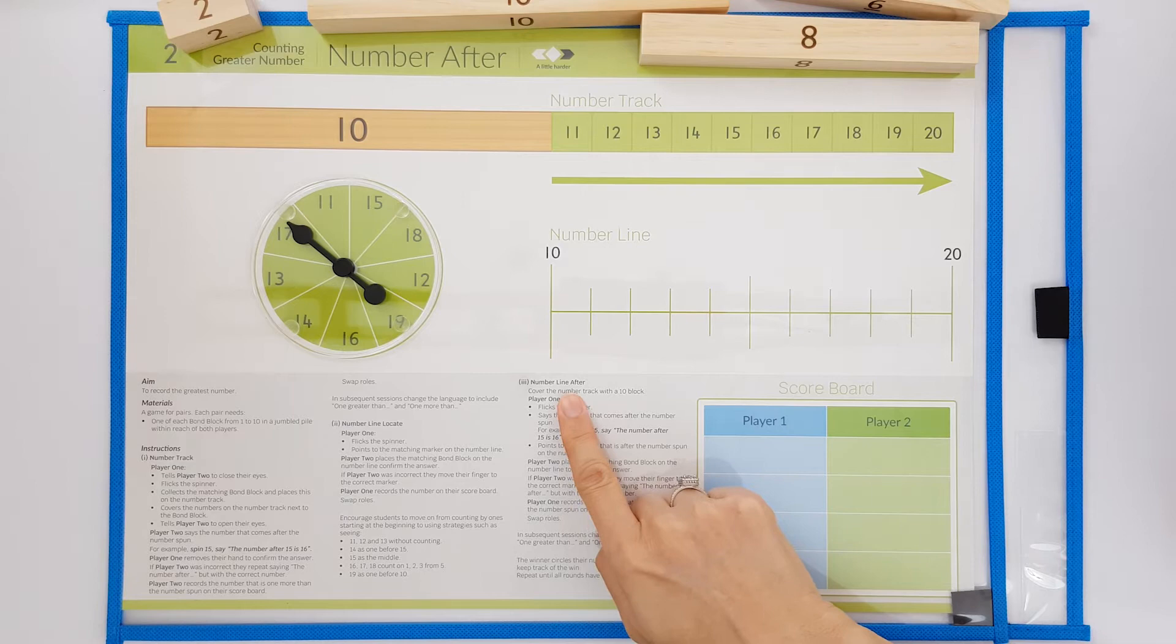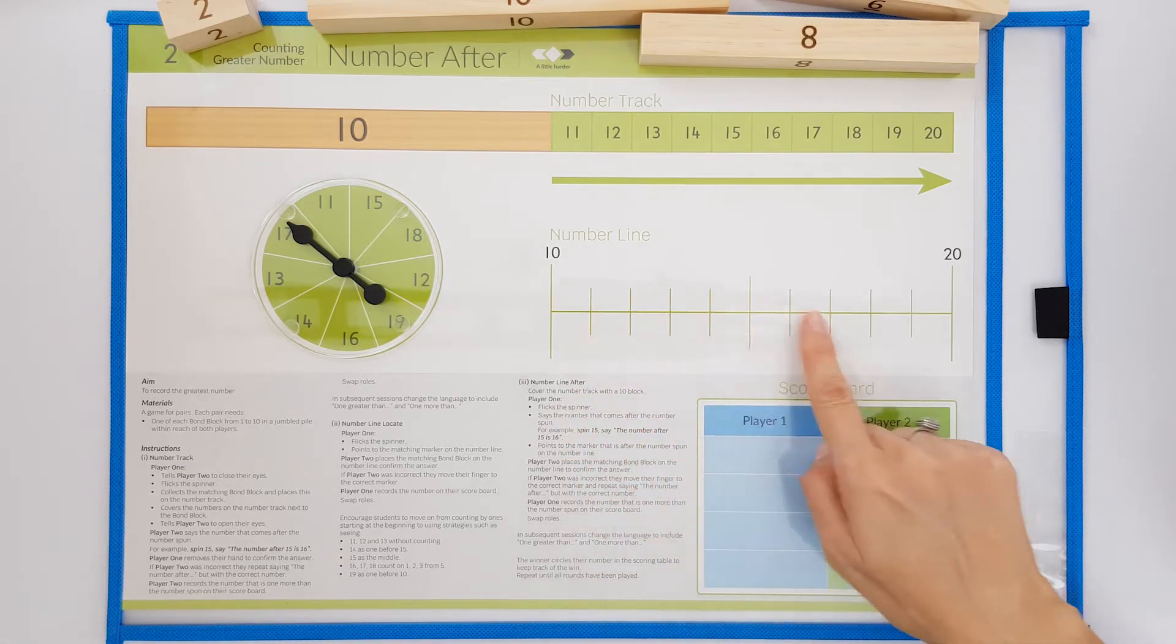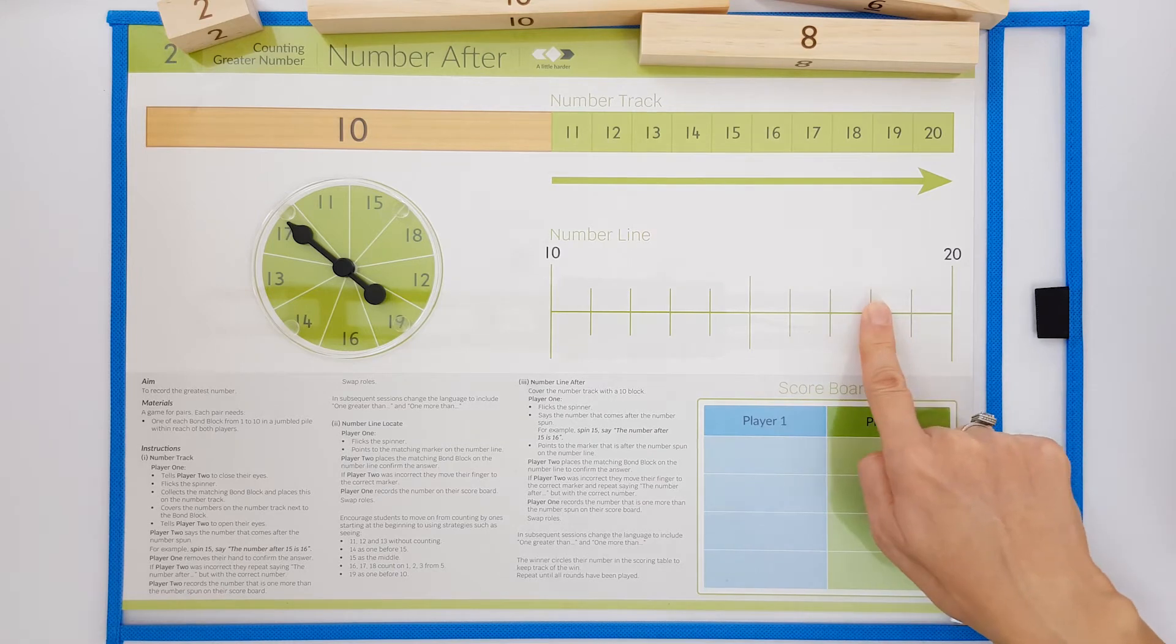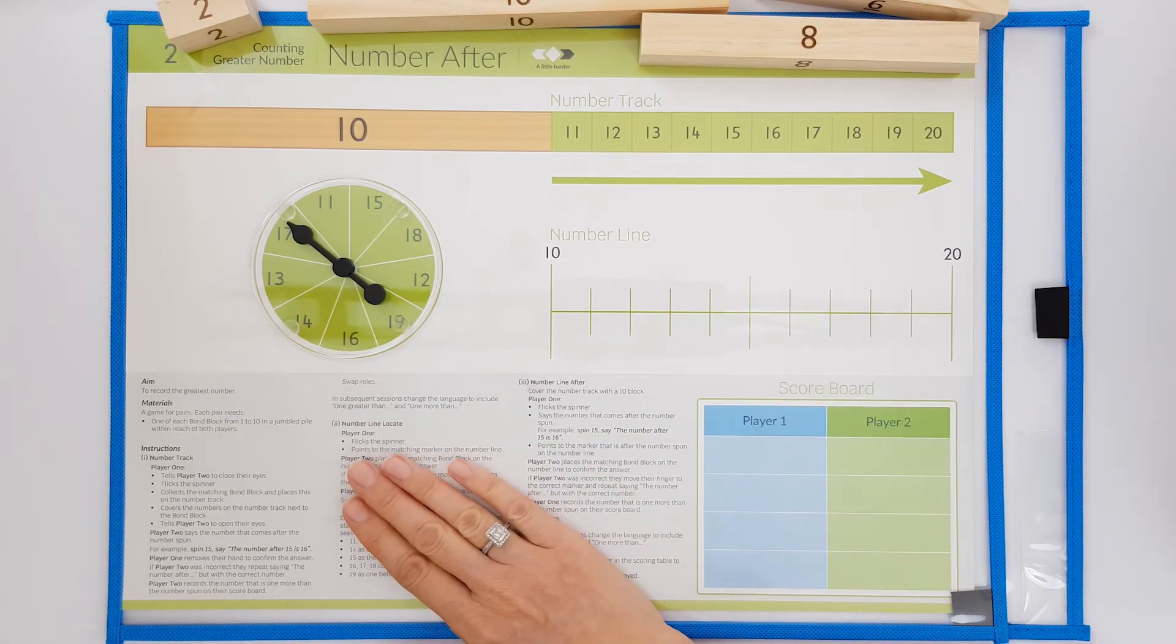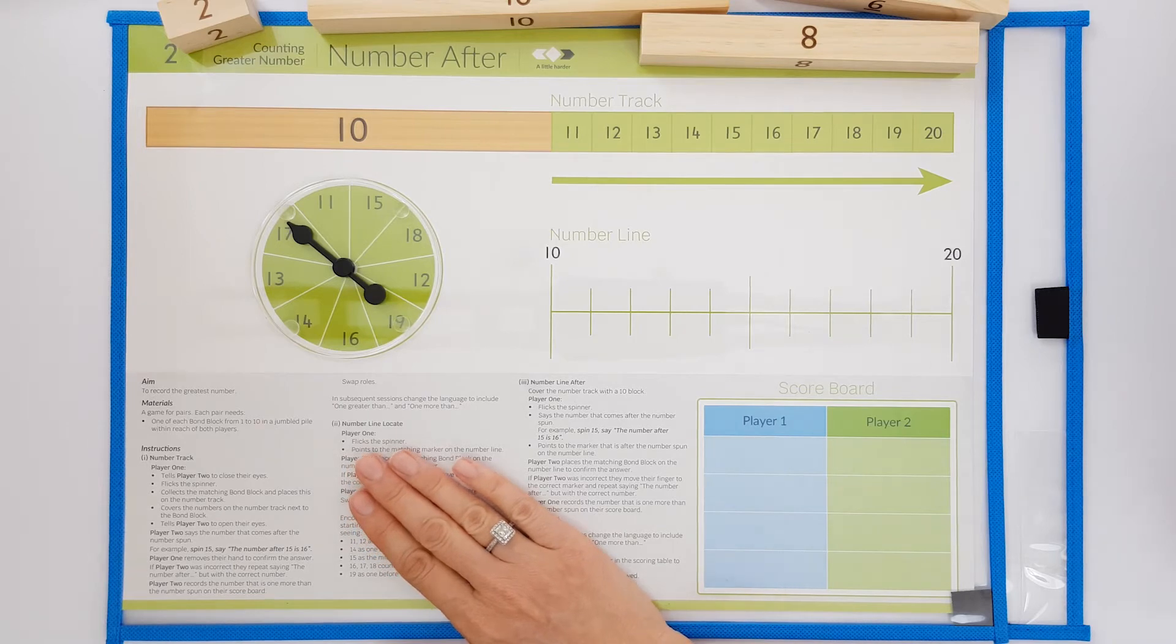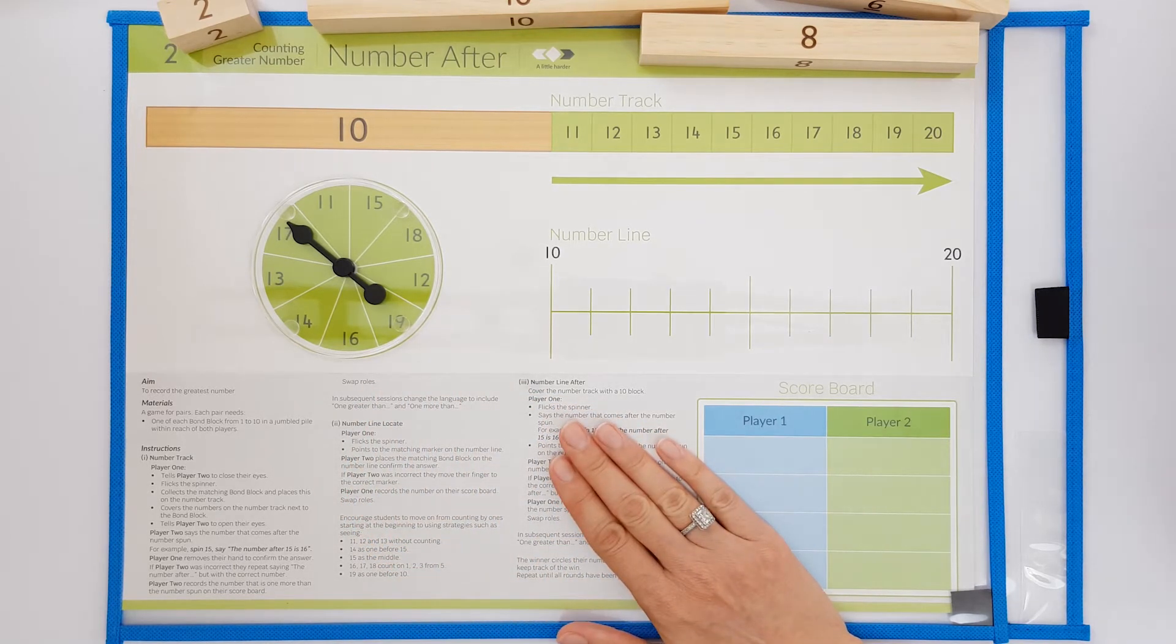The third activity is identifying numbers on the number line, but not the number spun, the number that comes after. Students need to be fluent with activity 2, locating the numbers, before they move on to this activity.